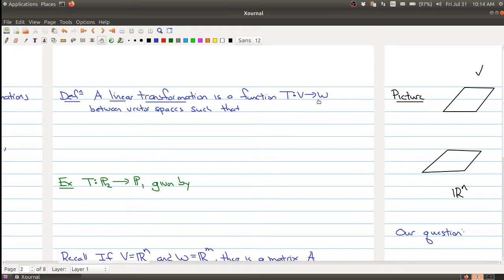between arbitrary vector spaces V and W is a function between these spaces such that the following two facts are true. First, when you take the sum of two vectors and stick it into your function, it's the same thing as first sticking u and v in the function to get something in W and then adding them in W.